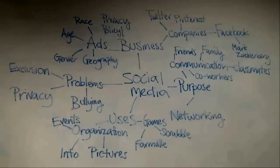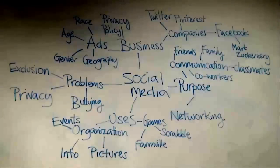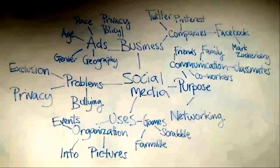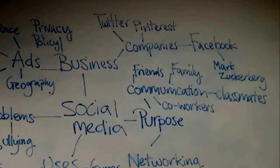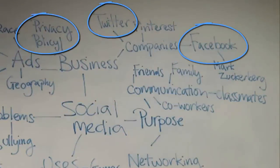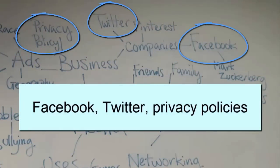If you were writing a paper about social media, you could narrow your topic by choosing a few issues that came up on the concept map. For example, Facebook, Twitter, and privacy policies. How do the privacy policies of different social media companies differ?